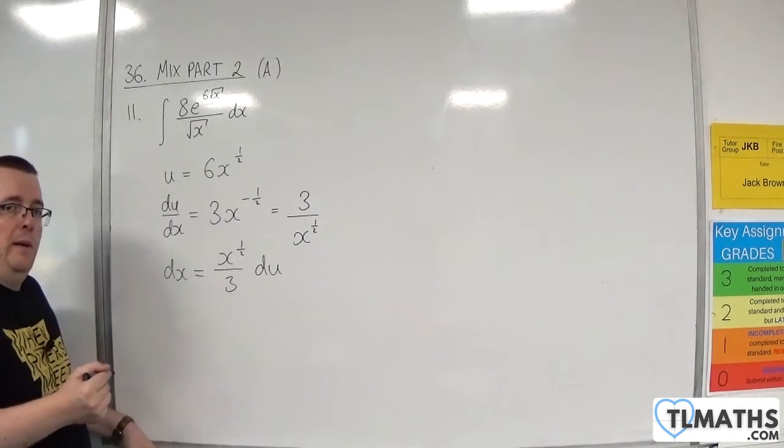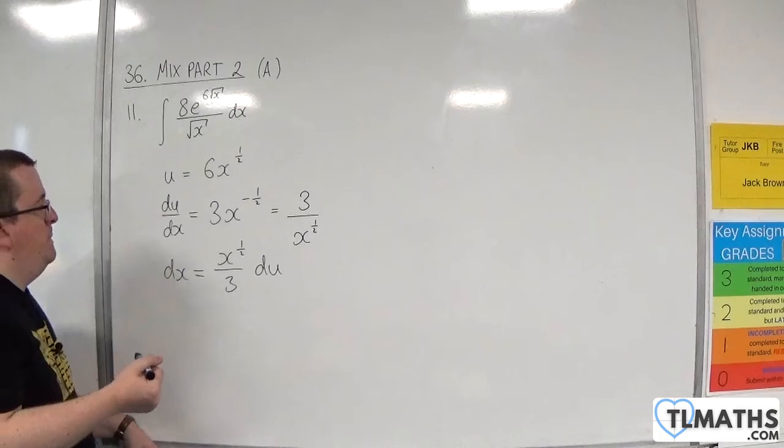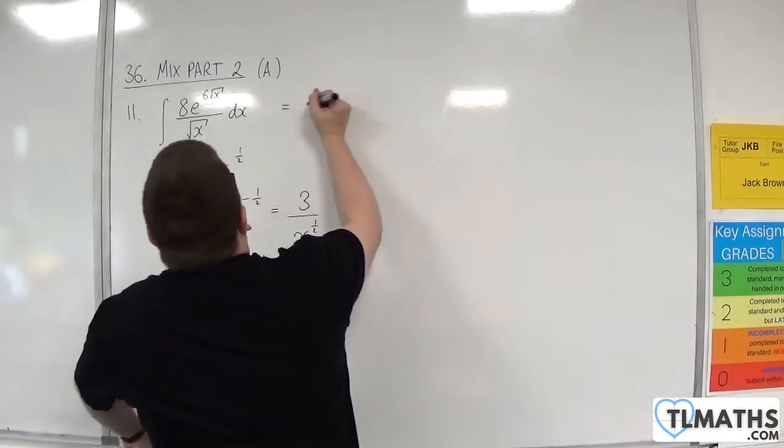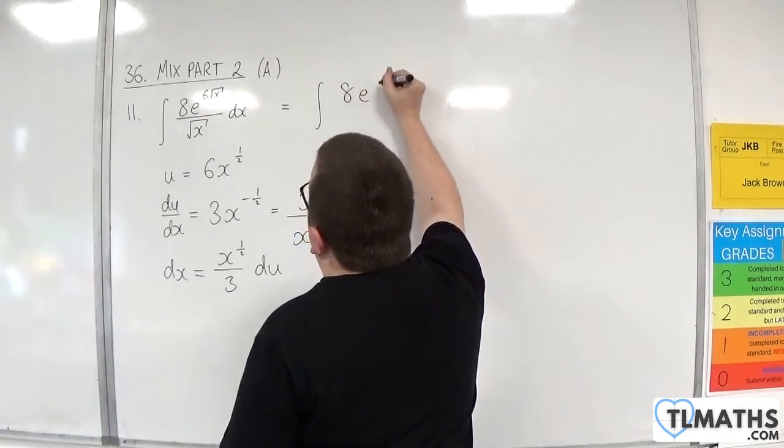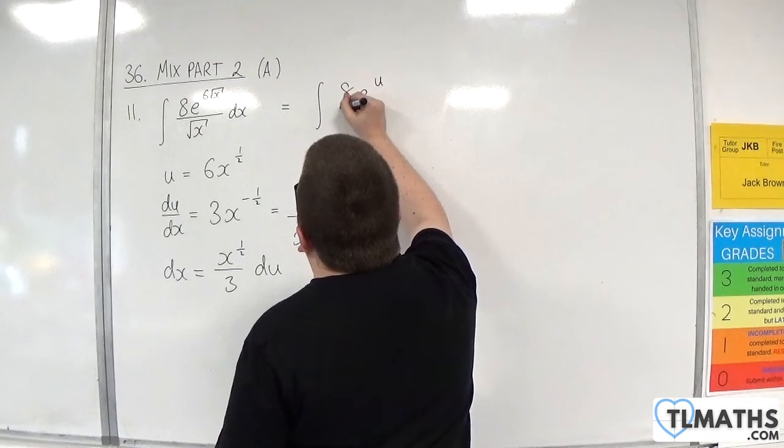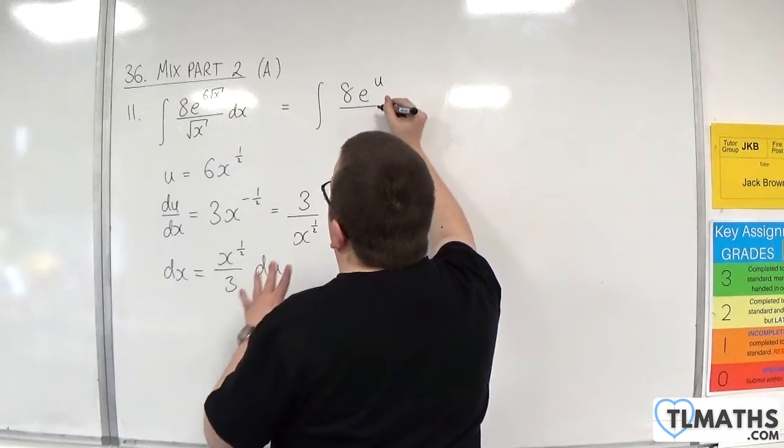That's what would happen if we rearranged everything. So we have the integral of 8e to the u over root x, which is x to the half.